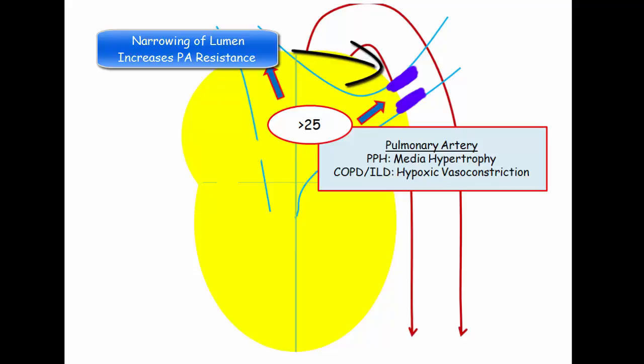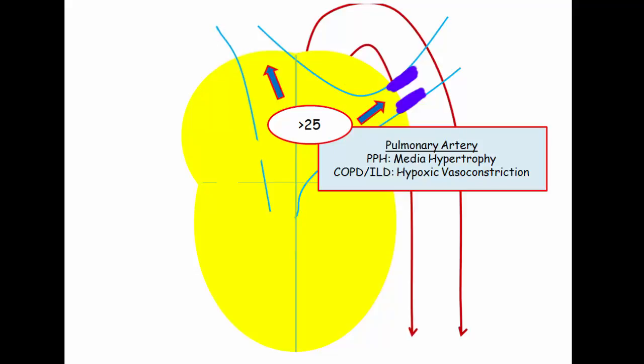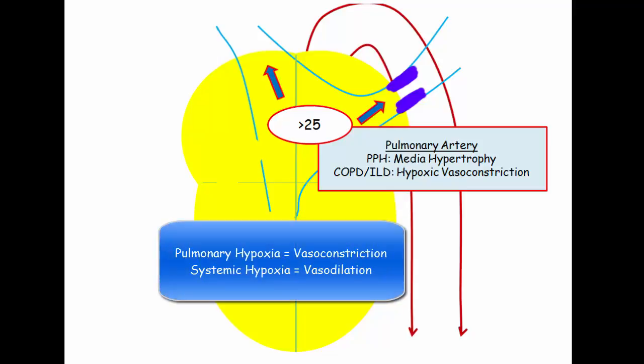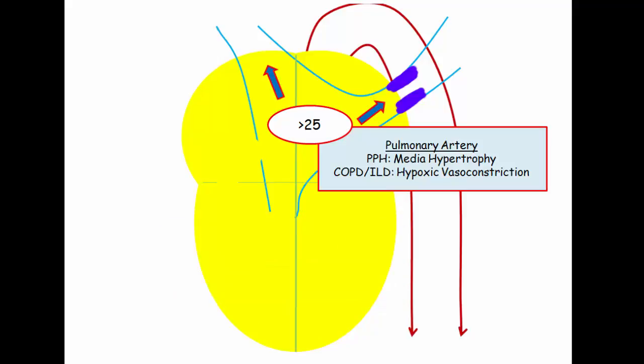In primary pulmonary hypertension, intimal hyperplasia and hypertrophy of the media lead to narrowing of the lumen—an example of an arteriopathy we'll discuss in more detail later. In diseases of the pulmonary parenchyma, such as COPD or interstitial lung disease, hypoxia leads to chronic vasoconstriction. Unlike systemic vessels which vasodilate in hypoxia, the pulmonary vasculature constricts. This is an adaptive response to shunt blood toward well-oxygenated regions. However, if there are no well-oxygenated areas, the unfortunate result is elevation of pulmonary artery pressures.